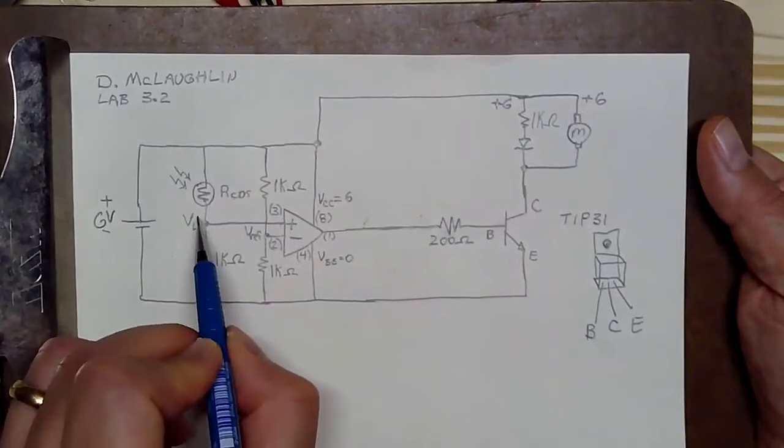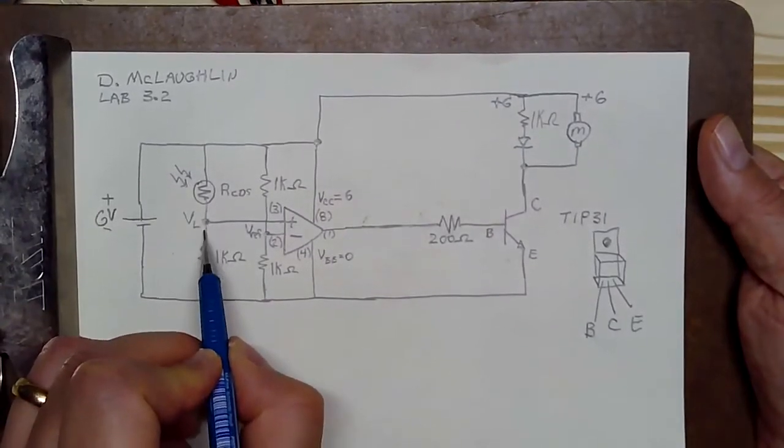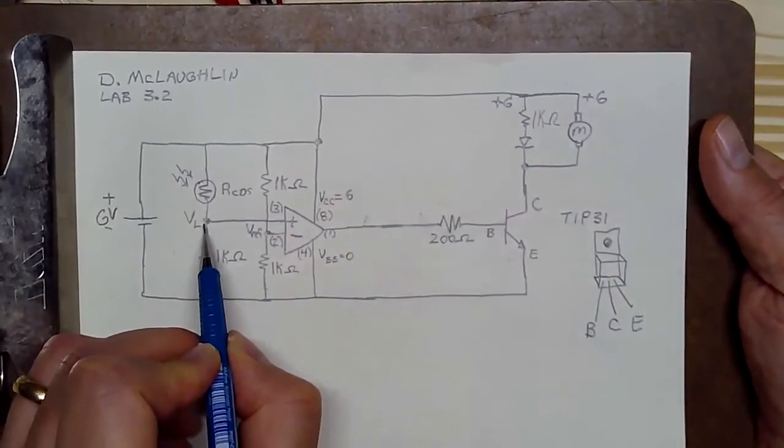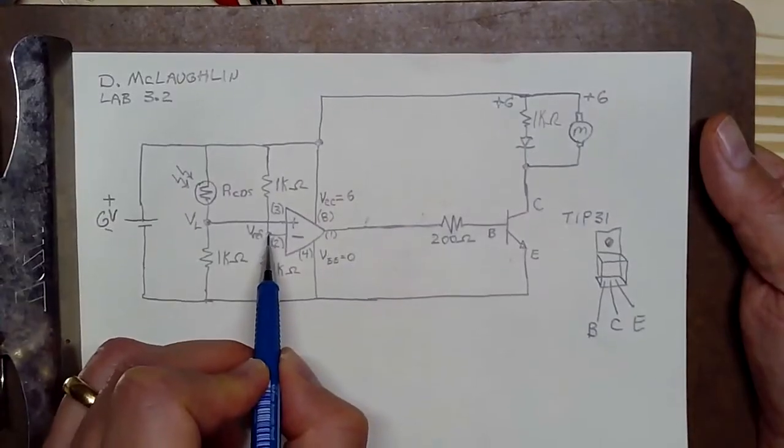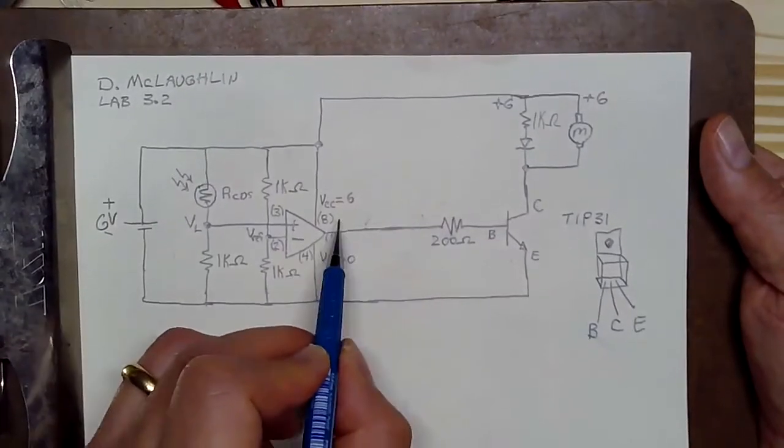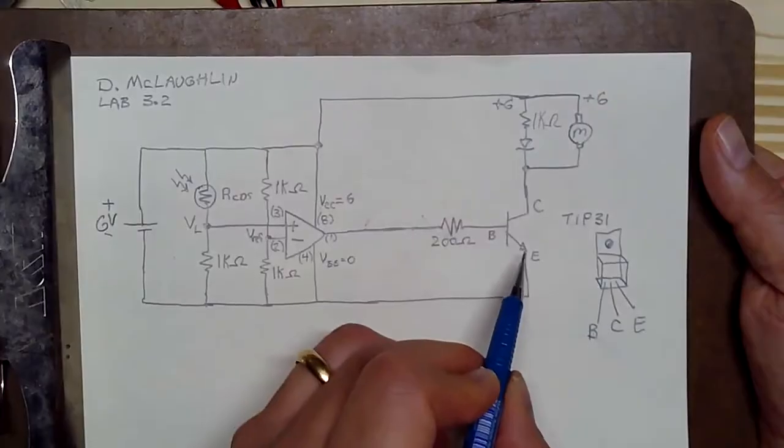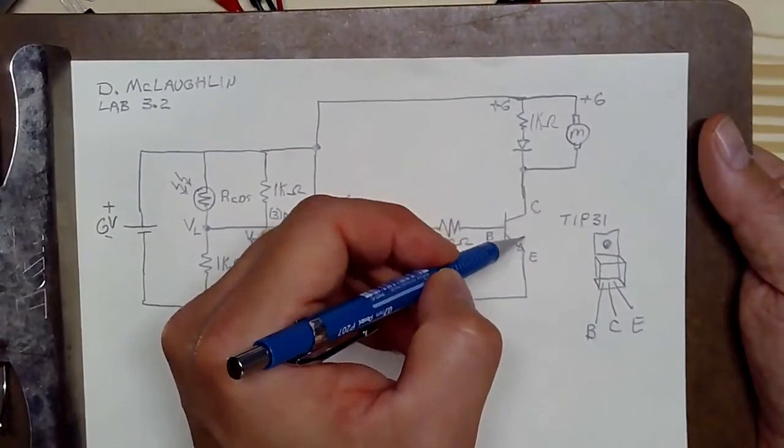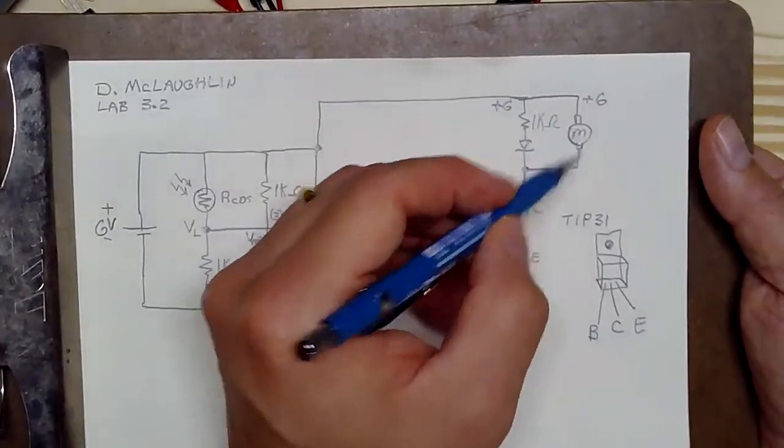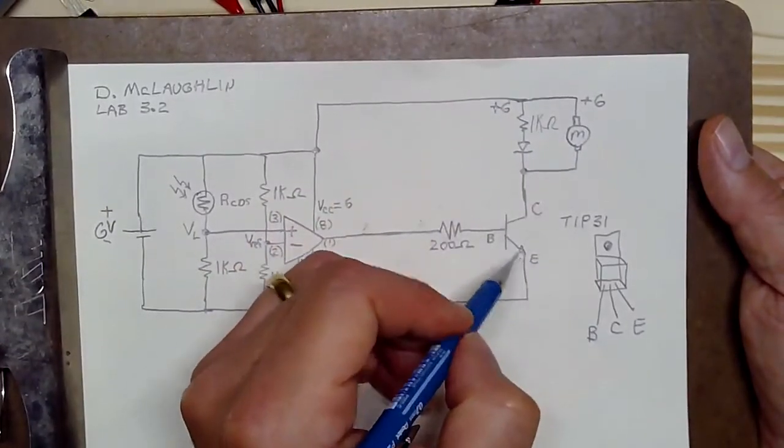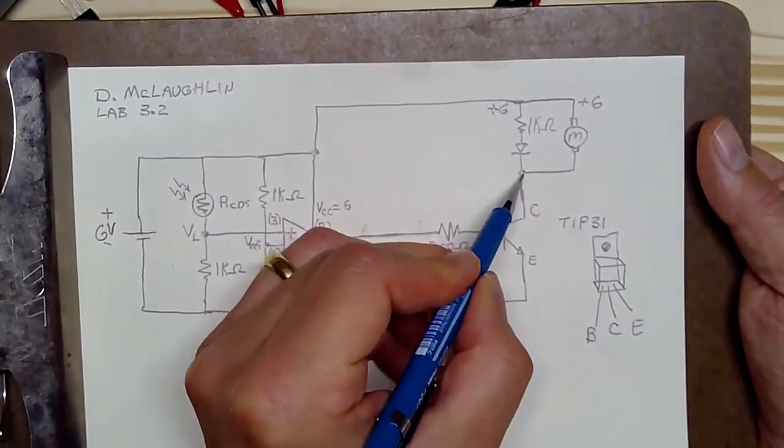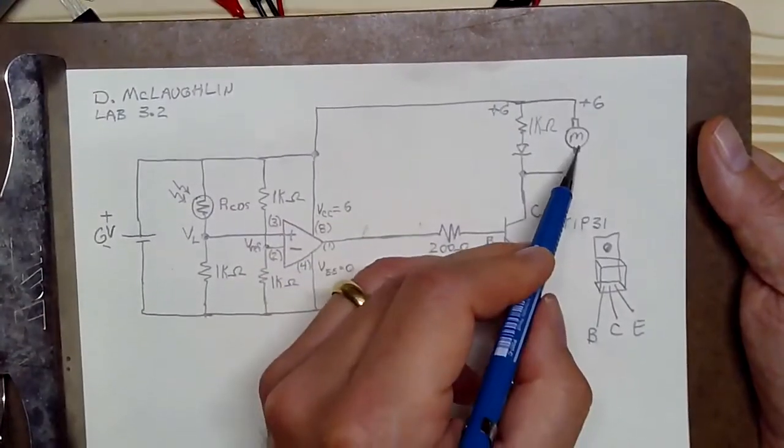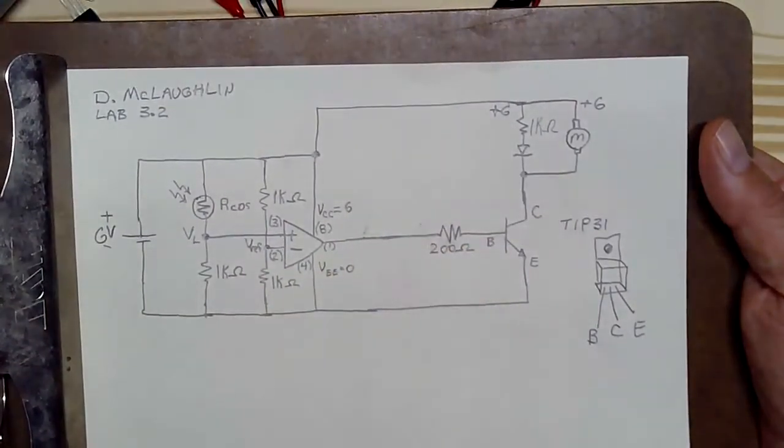So again, we have bright light shining on the CDS cell. VL, that's V light, exceeds V ref. The output of the op amp goes high. That's turning on this transistor. That means you've got a connection between the collector and the emitter and then this functions as a low side switch. It's essentially connecting this node to ground and then the motor will run and the LED will glow.